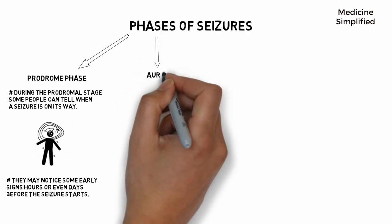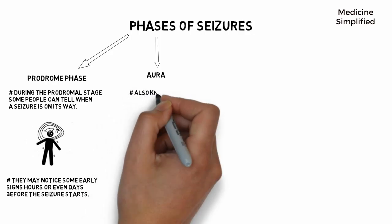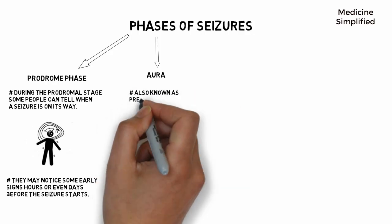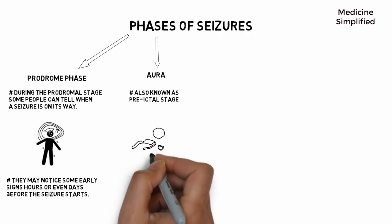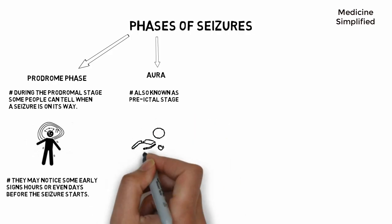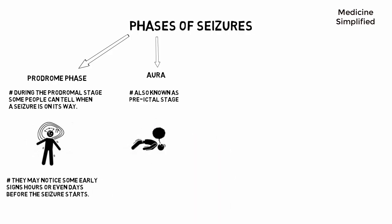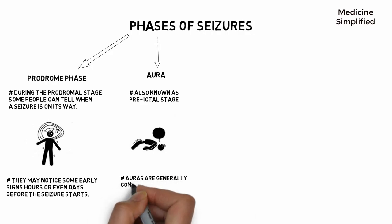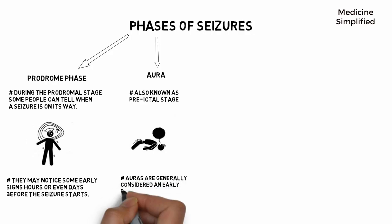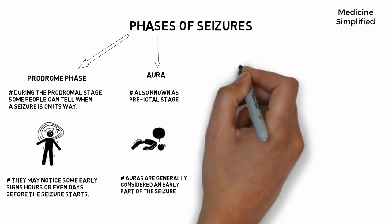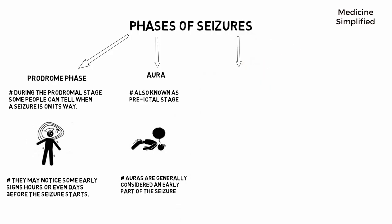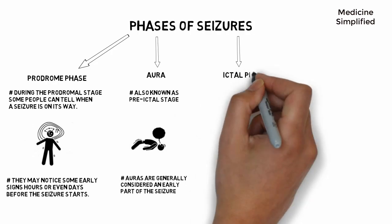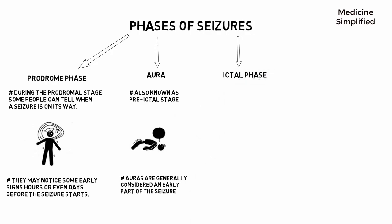The second phase is the aura phase, also known as the preictal stage. Auras are generally considered an early part of a seizure, which is why it is called the preictal stage.